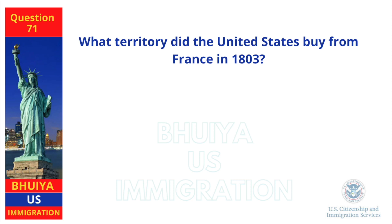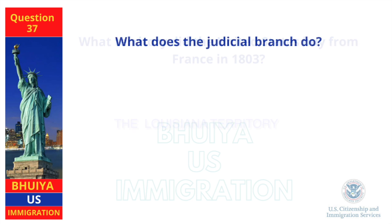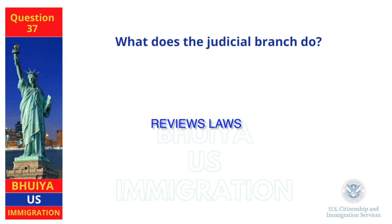What territory did the United States buy from France in 1803? The Louisiana Territory. What does the judicial branch do? Reviews laws.